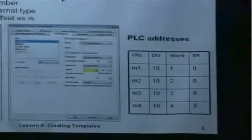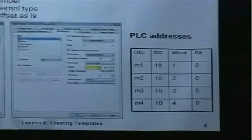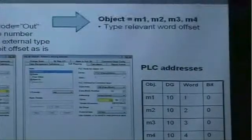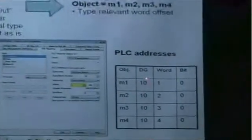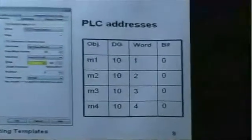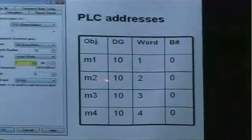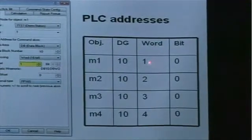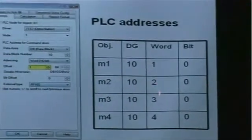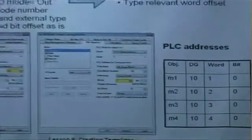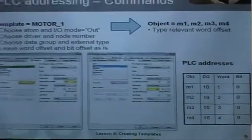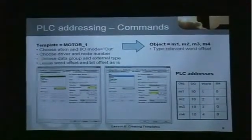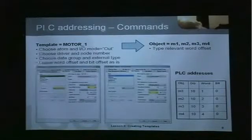If we look at four different motors all based on the same template, the PLC addressing would look like this. We have data block 10 as the common property set in the template, and then we assign a word offset of one for each of the four motors — word number one, two, three, and four. Typically a command in IGSS will take up 16 bits in the PLC — so one word.